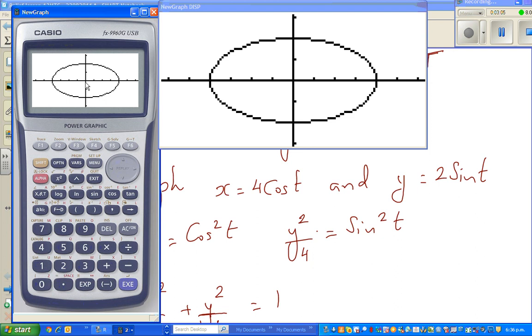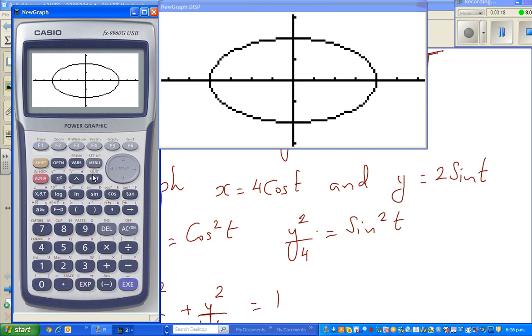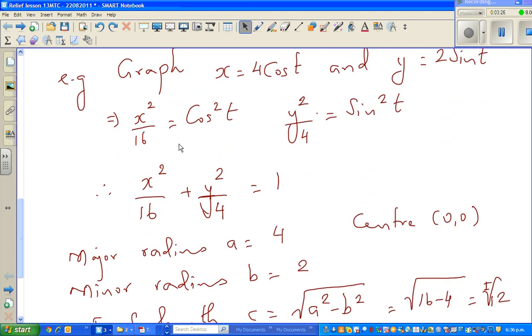It's centered at 0,0. That's all. Do not do any g-solve because these are not... Let me try roots and it doesn't work here because this is in a parametric form. Now what I've done is converted this into Cartesian form which I hope you understand is x squared over 16 plus y squared over 4 is equal to 1.